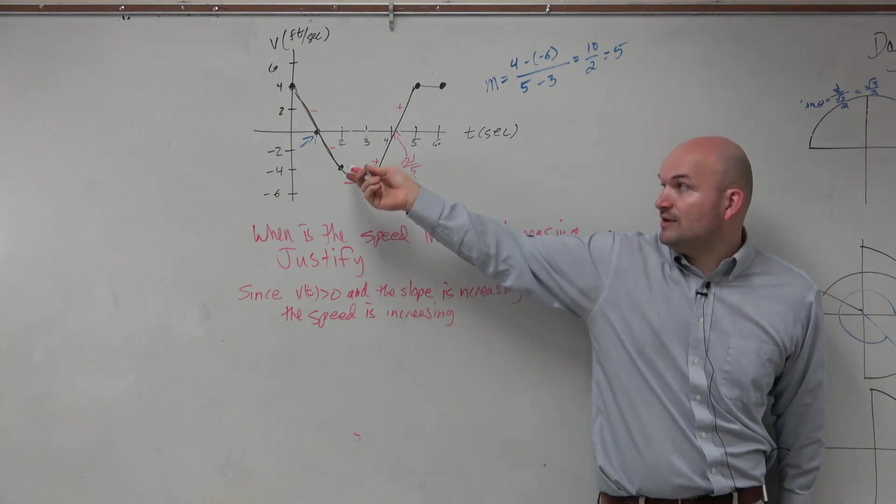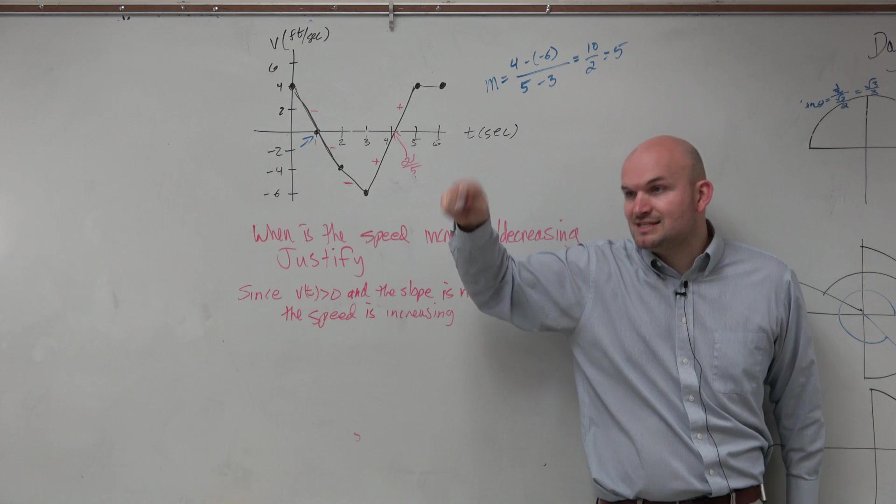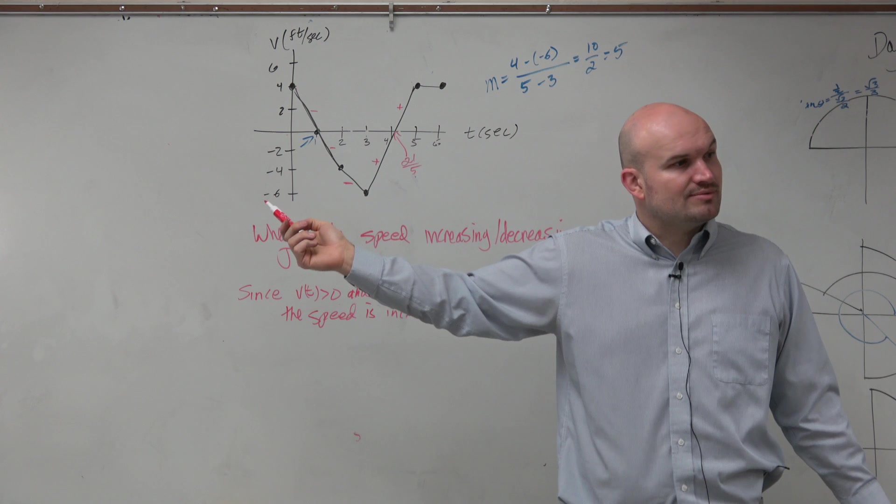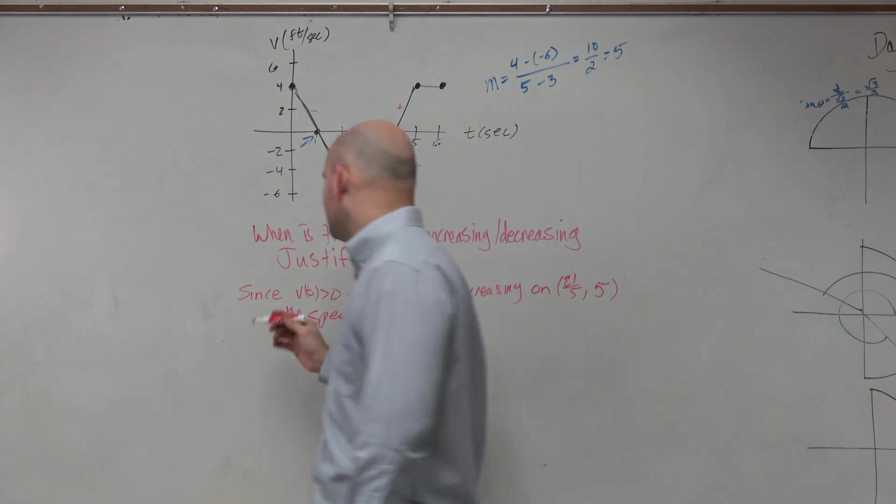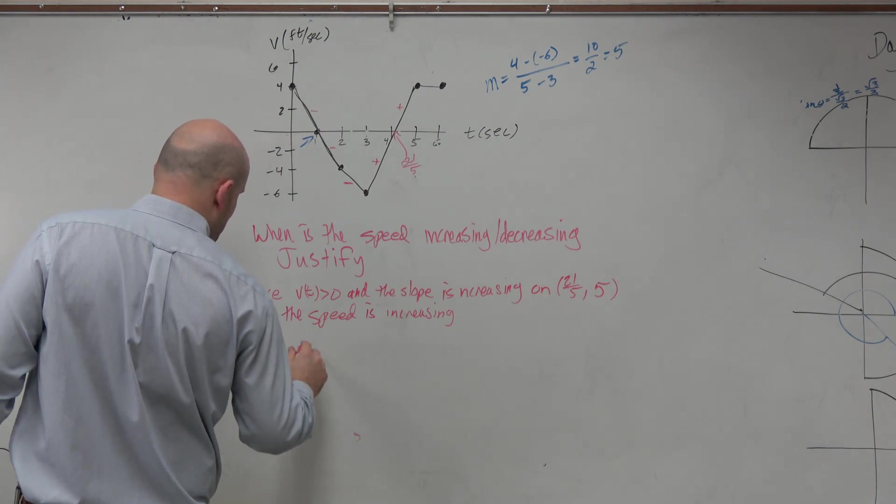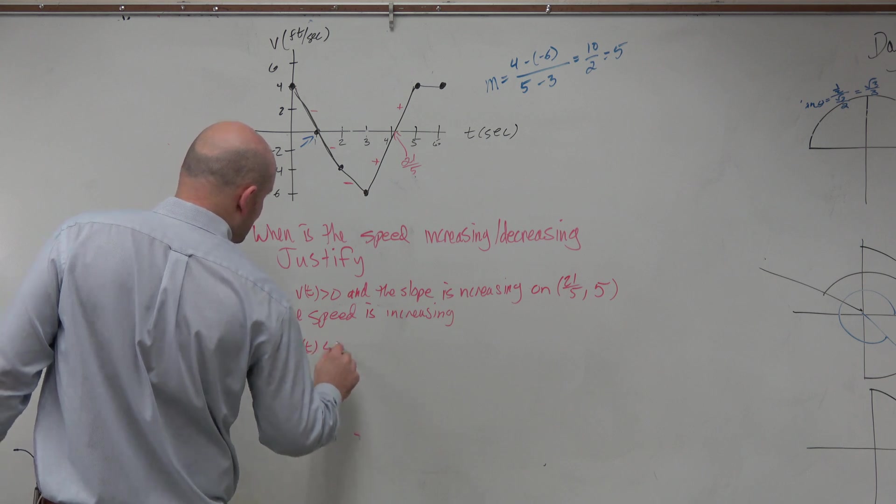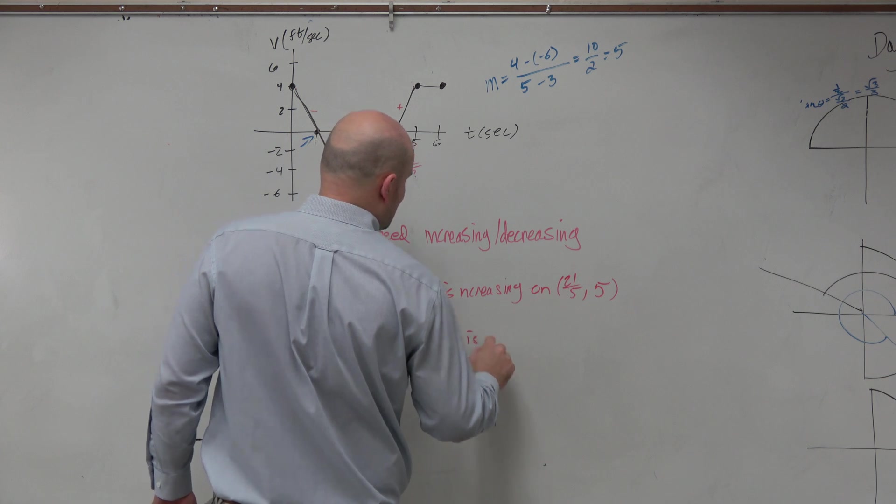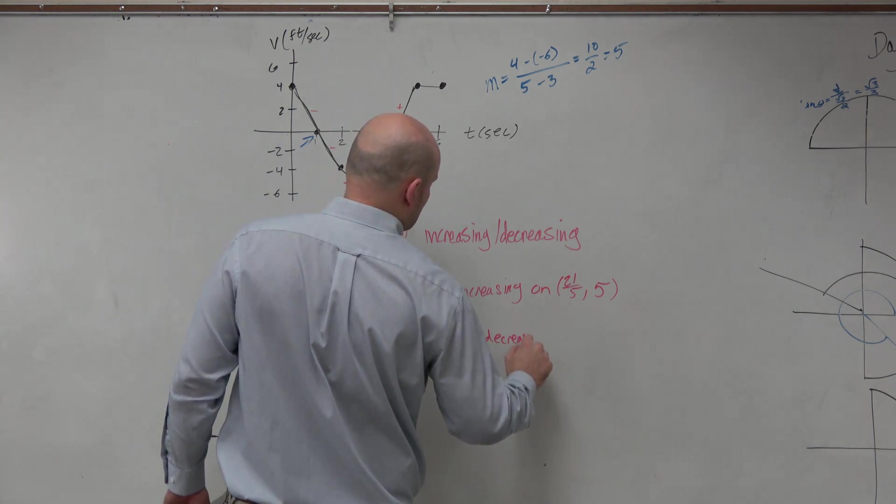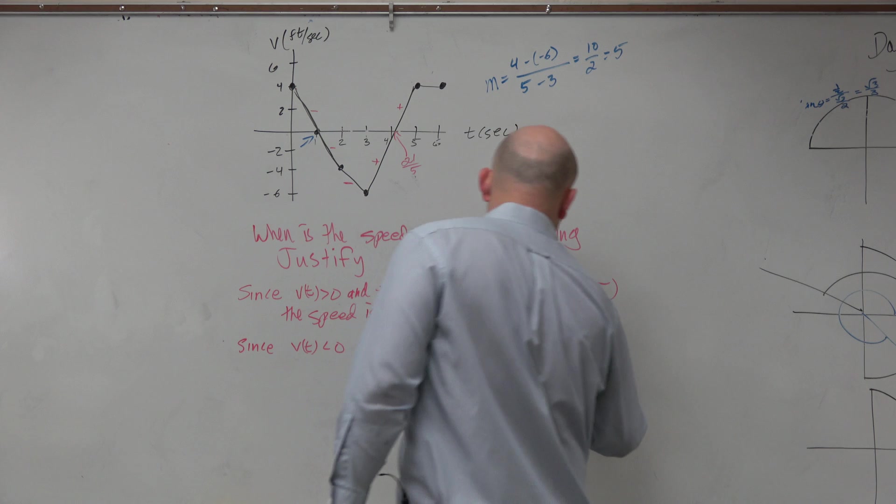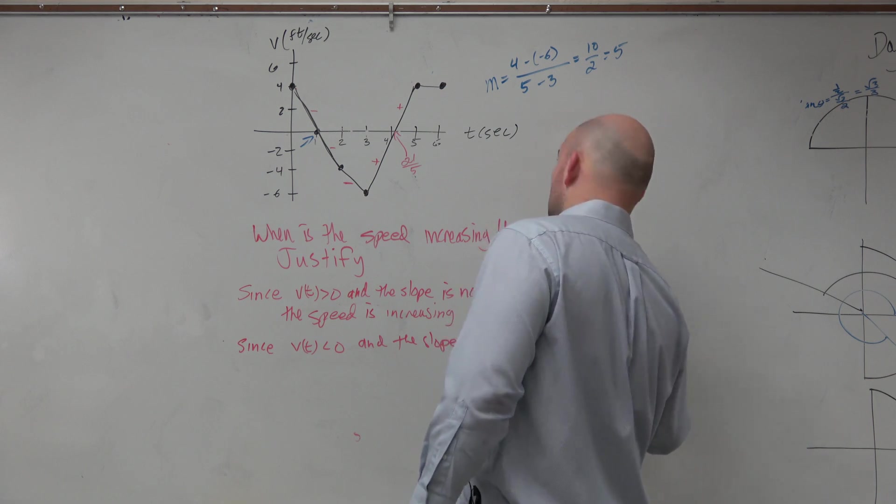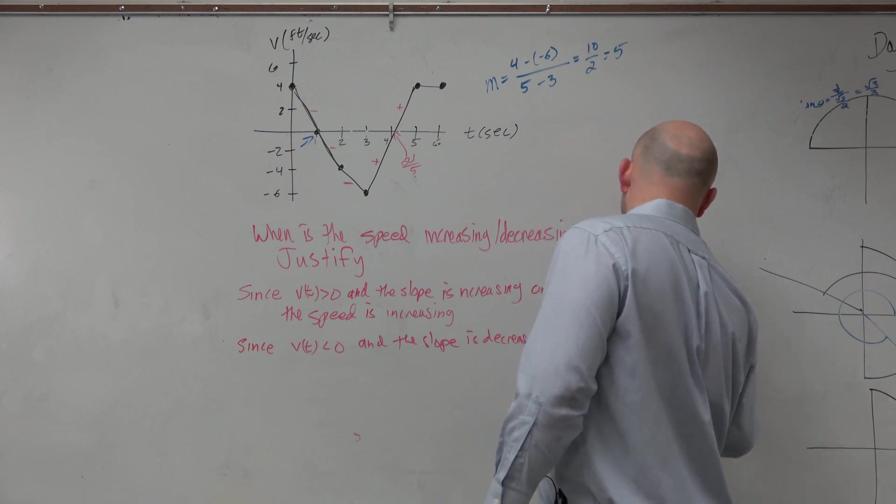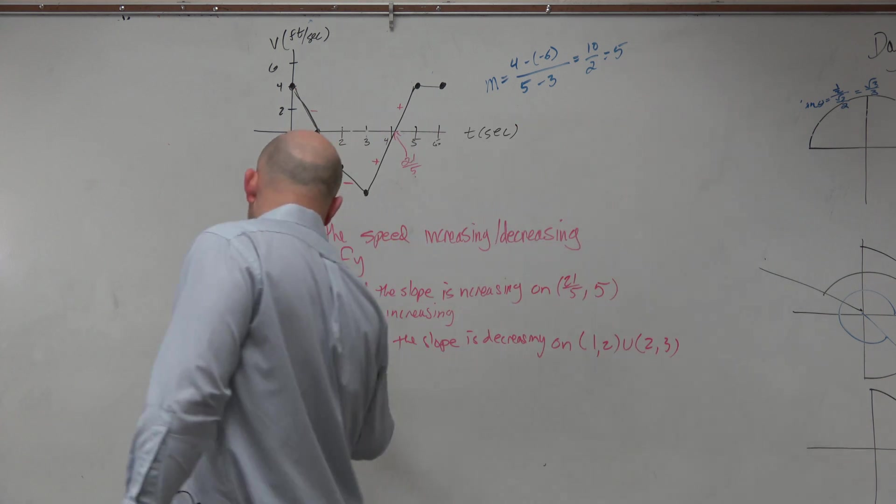Can't take sharp edges, don't work. So therefore, even though it's not like a velocity sharp turn, but no, we don't want to include that because at 2 we don't know what the slope. We can't determine that the slope is decreasing. But anyways, what we could say for this is since v sub t is less than 0 and the slope is decreasing on the interval 1 to 2 union 2 to 3, the speed is decreasing.